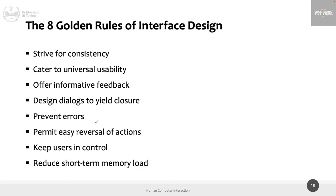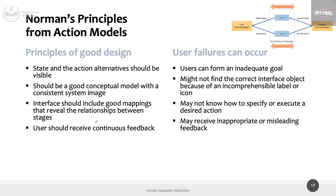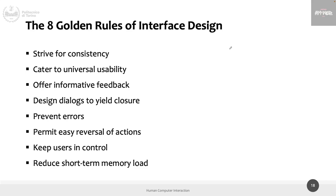These are the five interaction styles — all experienced in interactive systems, each with pros and cons, and they can be mixed. Tomorrow we will start again from here. From the Norman model we can extract principles: state and action alternatives should be visible, there should be a good conceptual model consistent with what happens, a proper UI language, and users should receive continuous feedback. We will see all of these in the eight golden rules of interface design tomorrow.